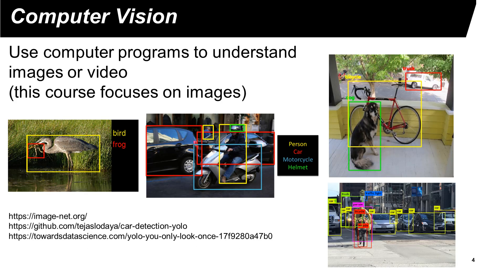This course has two parts: computer vision and embedded systems. What is computer vision? Computer vision uses computers to understand visual data, including images or video.